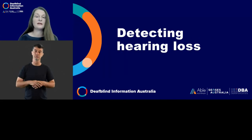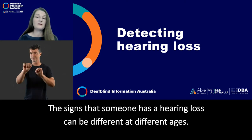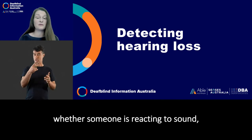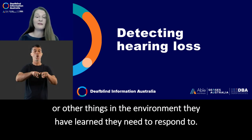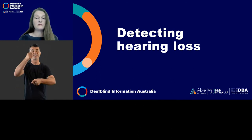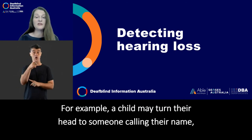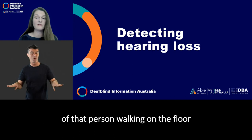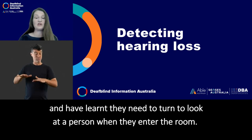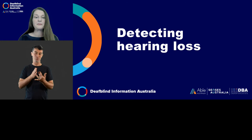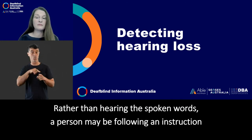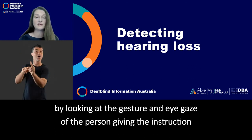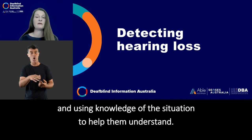Detecting Hearing Loss. The signs that someone has a hearing loss can be different at different ages. When observing behaviour, it can be difficult to tell whether someone is reacting to sound or other things in the environment they have learned they need to respond to. For example, a child may turn their head to someone calling their name. However, they may have turned because they felt the vibrations of that person walking on the floor and have learned they need to turn to look at a person when they enter the room. Rather than hearing the spoken words, a person may be following an instruction by looking at the gesture and eye gaze of the person giving the instruction and using knowledge of the situation to help them understand.